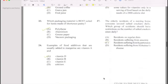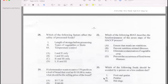Let's go to 28: Which of the following factors affect food safety of processed food? They gave us some examples: length of storage before processing, type of vegetable used, temperature control. The answer is B.